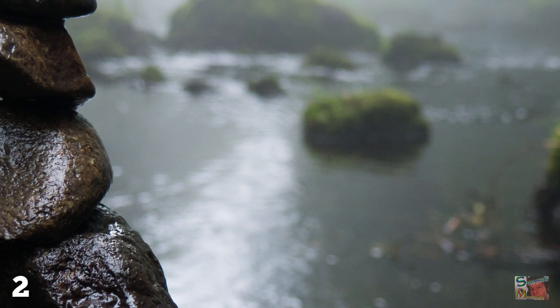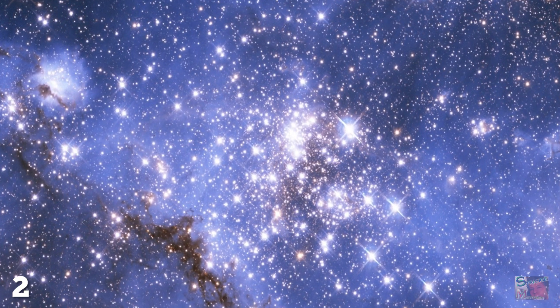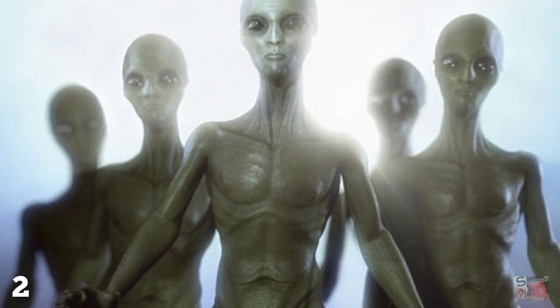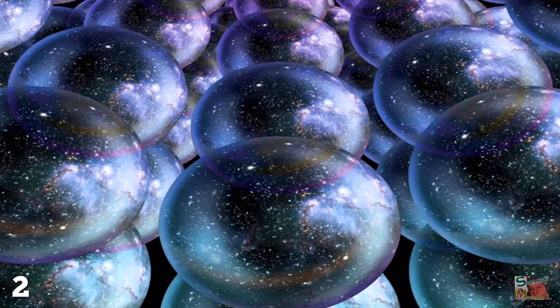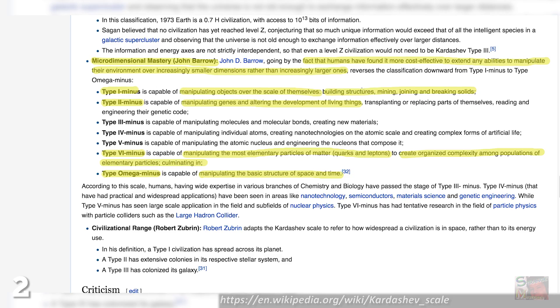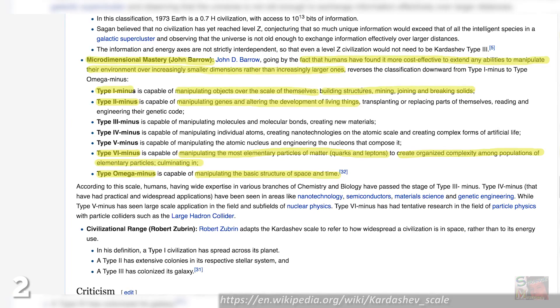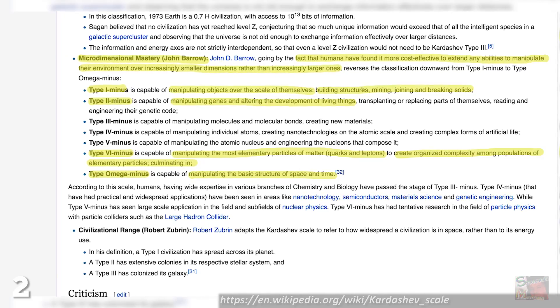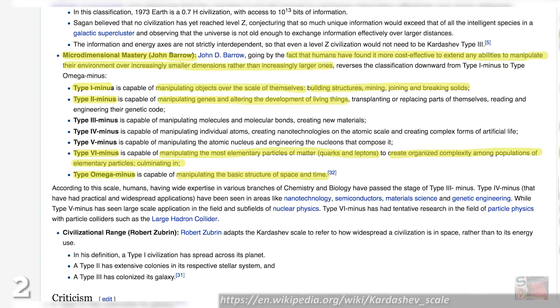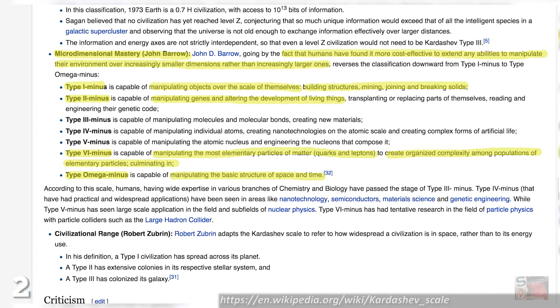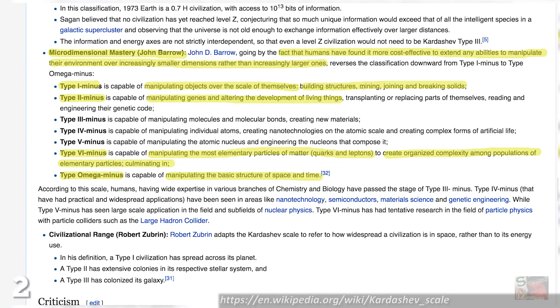While we're on terra firma fiddling with rocks, they're out there manipulating the stars themselves. According to another technological scale, they may even be able to play with time, space, and transcend the multiverse too. The micro-dimensional mastery levels classify beings according to how small a scale they can work on. Type 1 can build structures and cut minds. Type 2 can manipulate genes, and further types up to Level 6 can edit molecules, atoms, the atomic nucleus, quarks, and leptons.